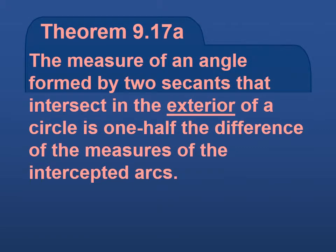Secants that intersect on the outside, the exterior of the circle, is half the difference of measures of the intercepted arcs.